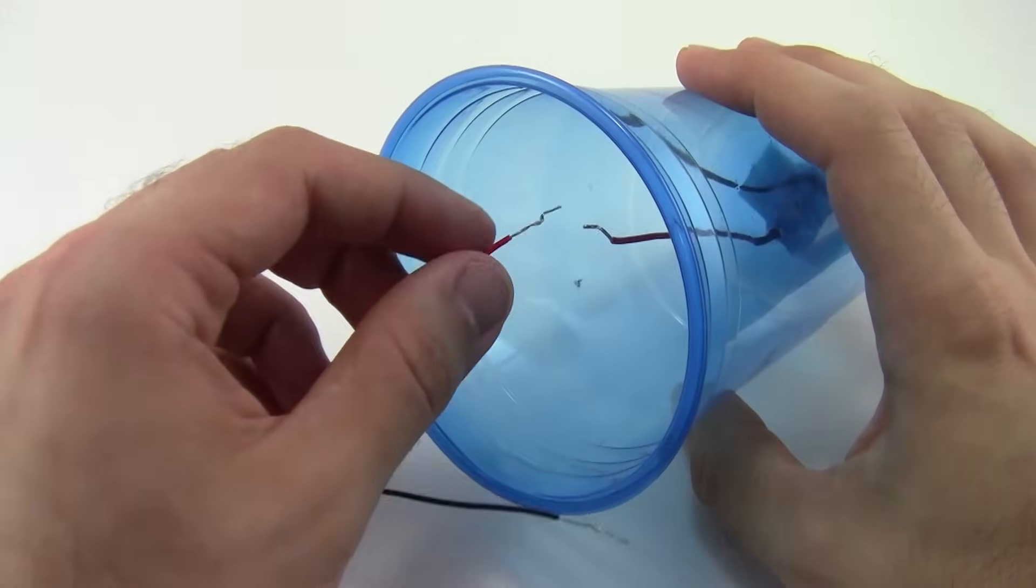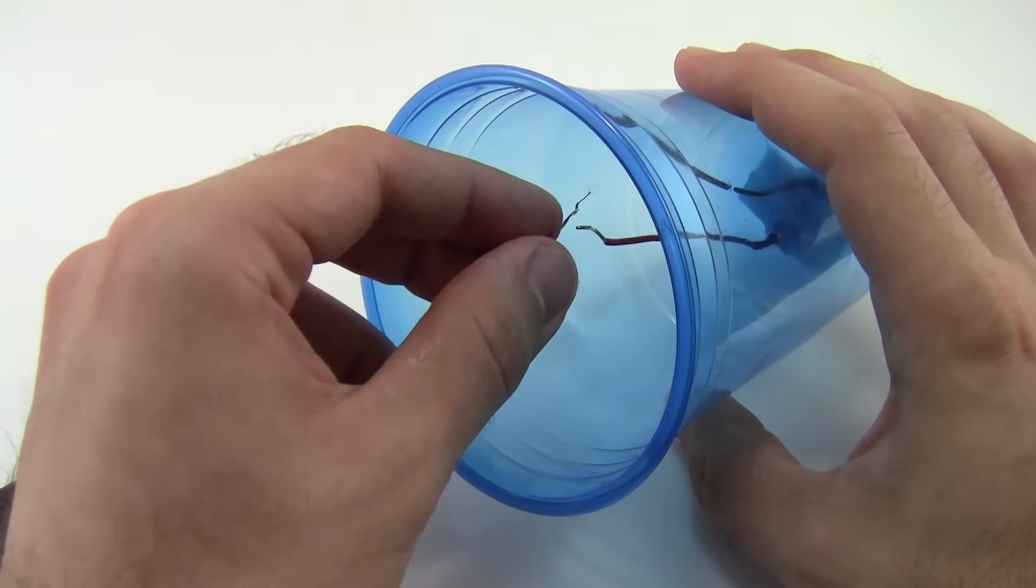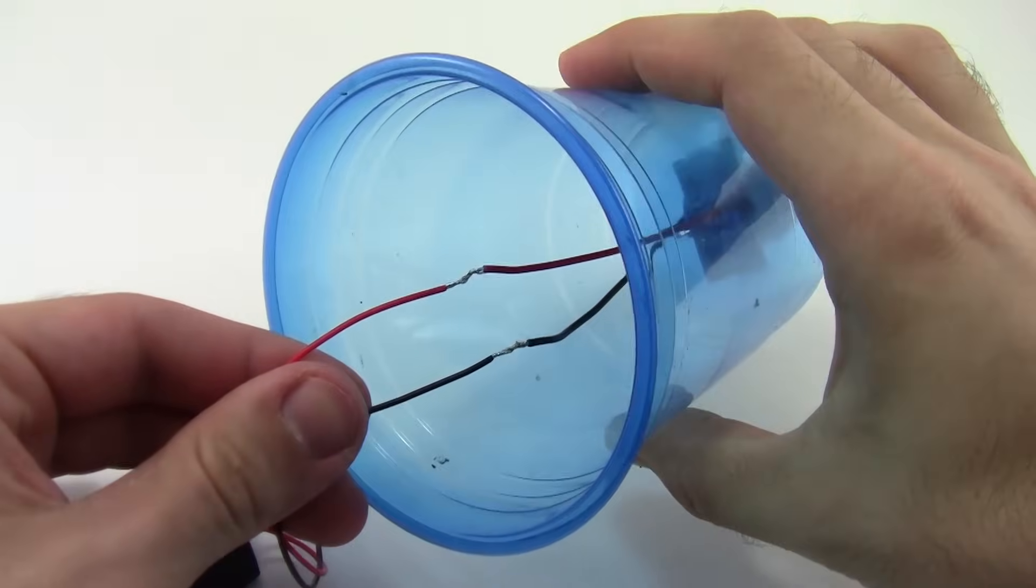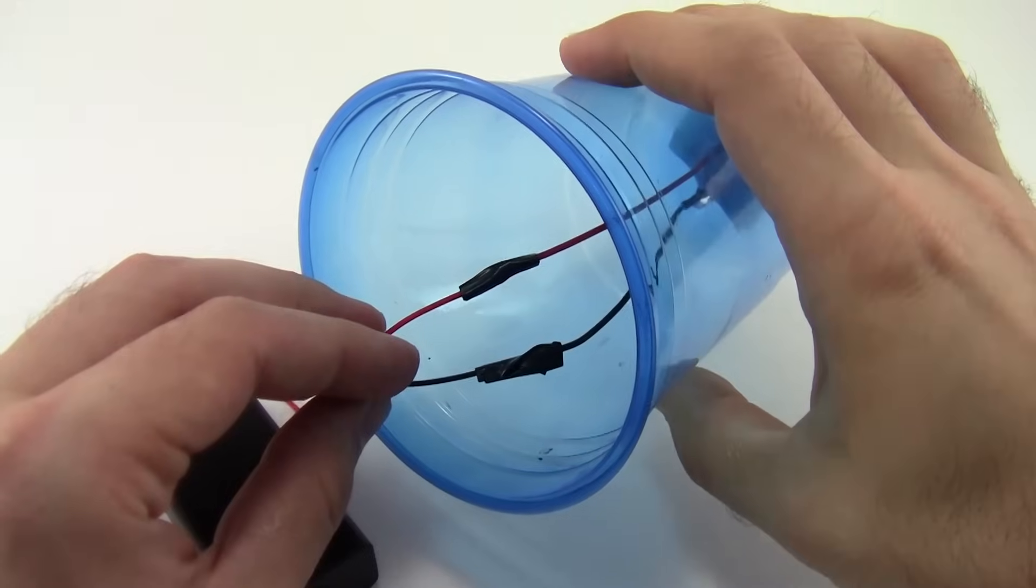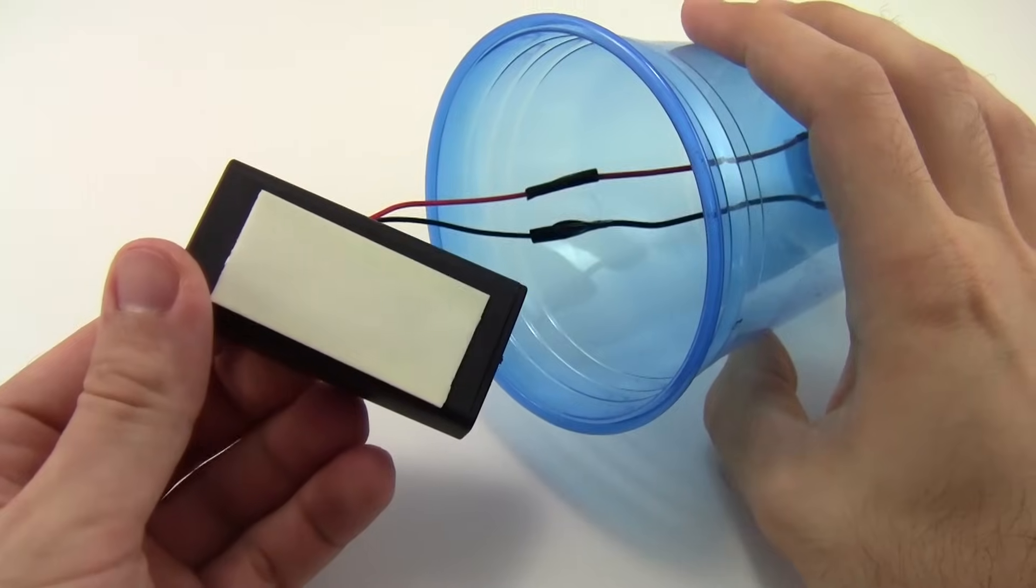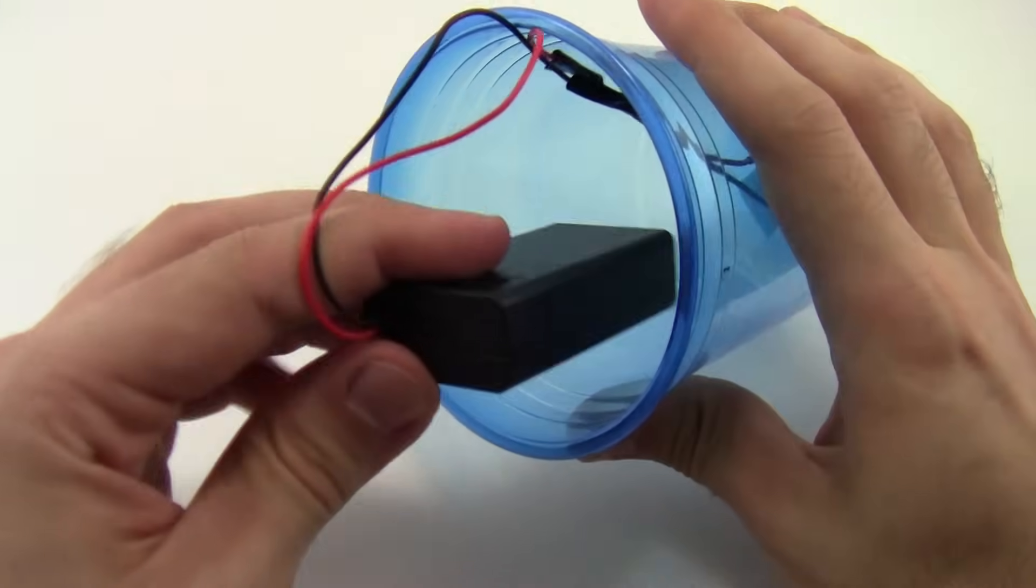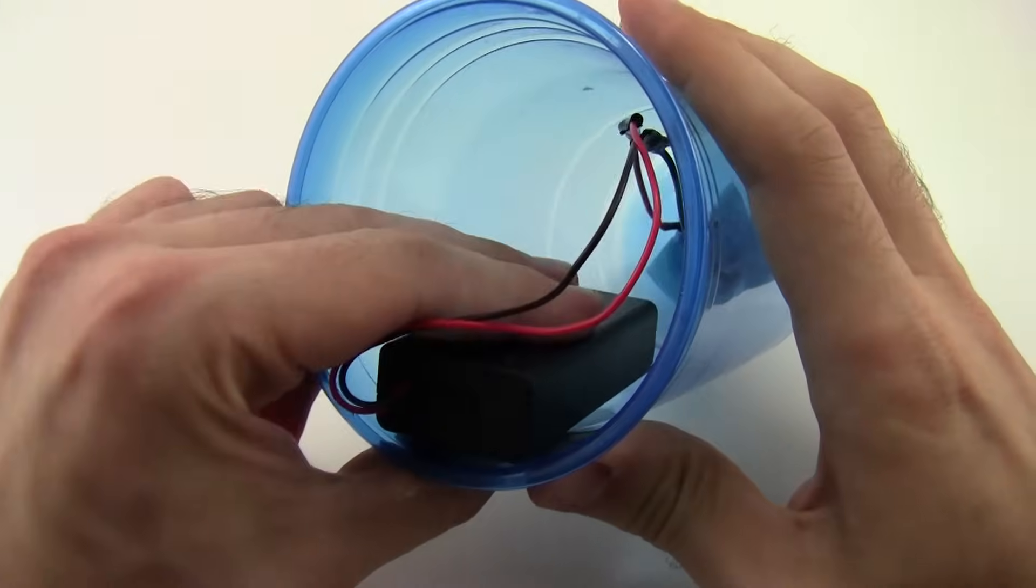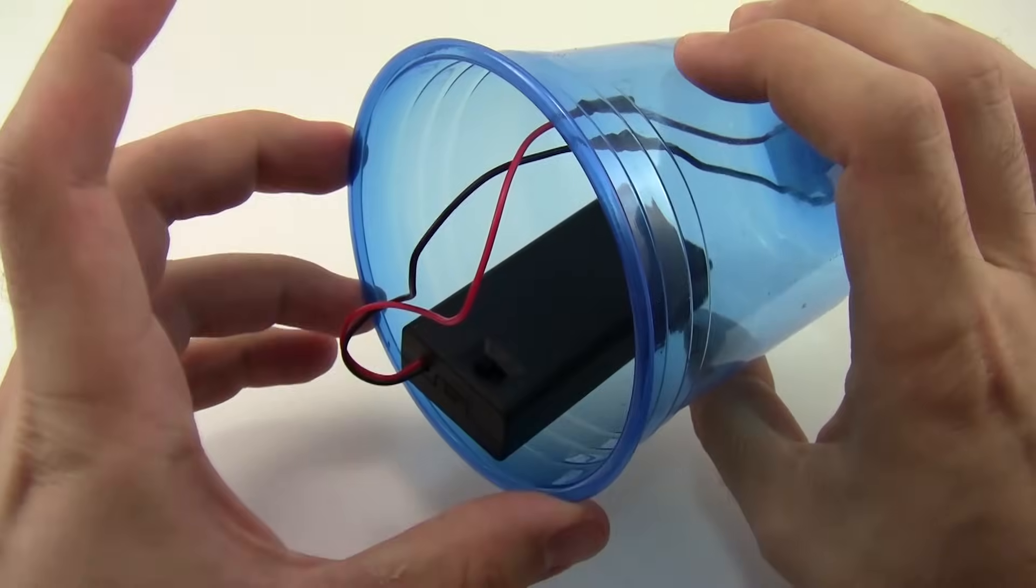Tightly twist together the exposed metal ends of the red and black wires. Then, wrap both connections in electrical tape. Use a piece of double-sided foam tape to attach the battery pack to the inside of the cup. Make sure you'll still be able to reach the power switch.